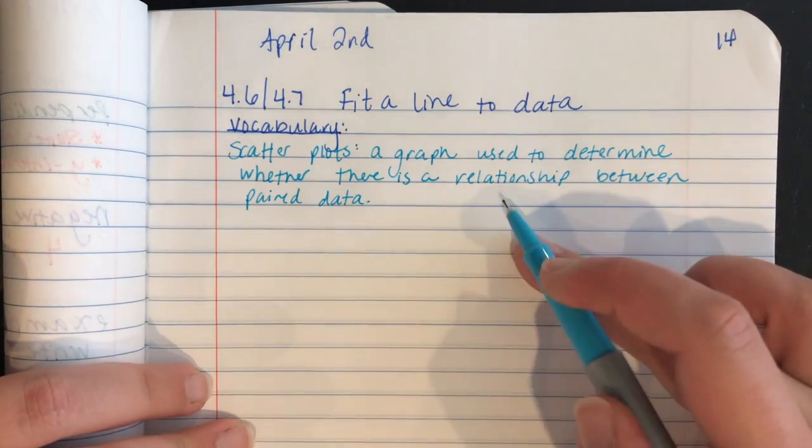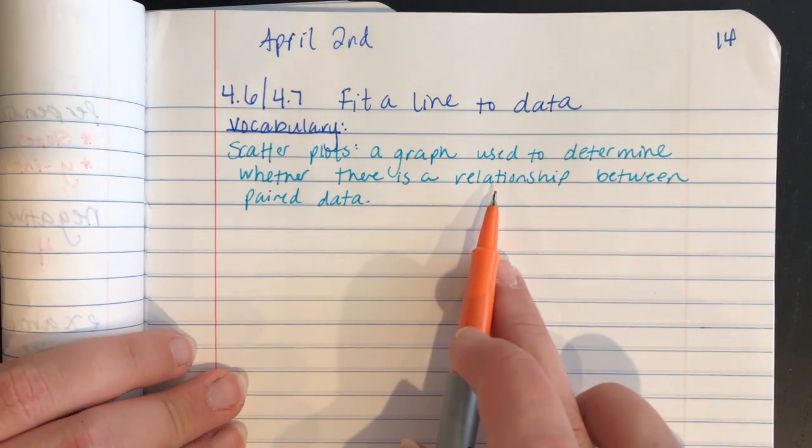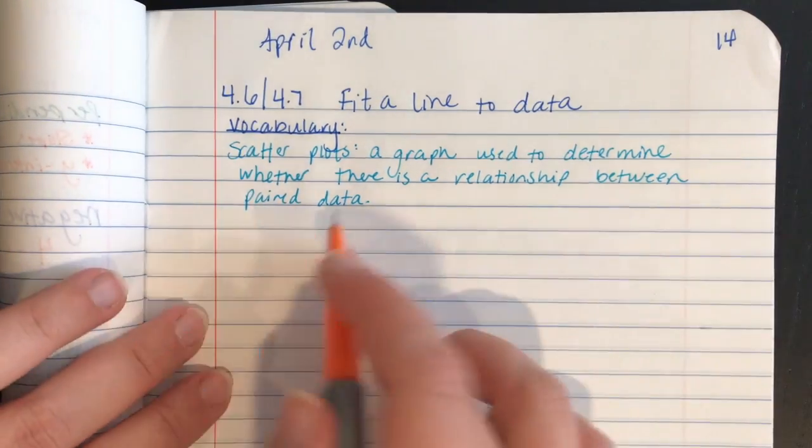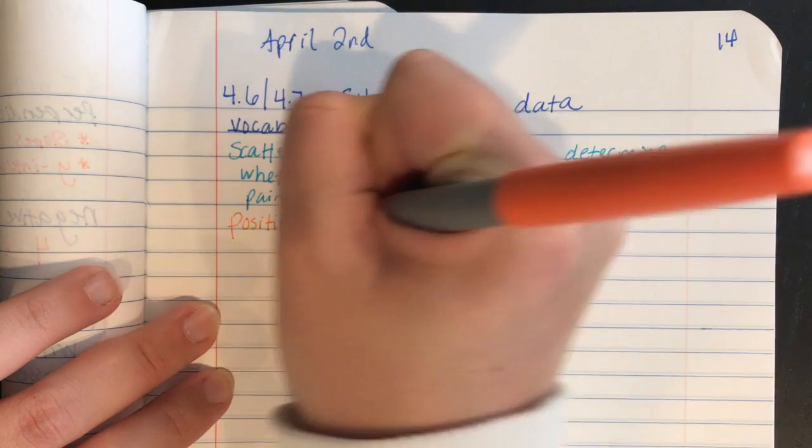So again, you've already seen these. It's a graph where the dots are kind of all over the place instead of being in a nice straight line. So there's three different kinds of relationships you can have. We call them correlations. So the first correlation is a positive correlation.